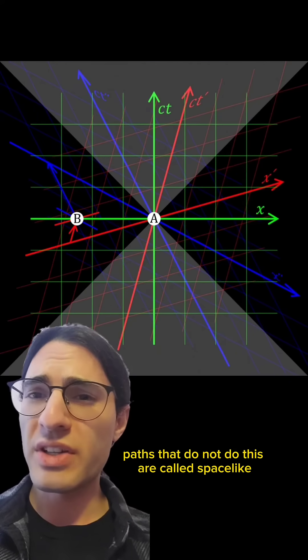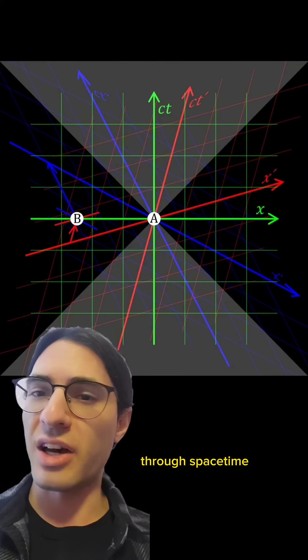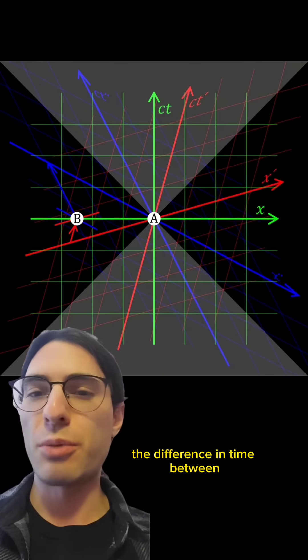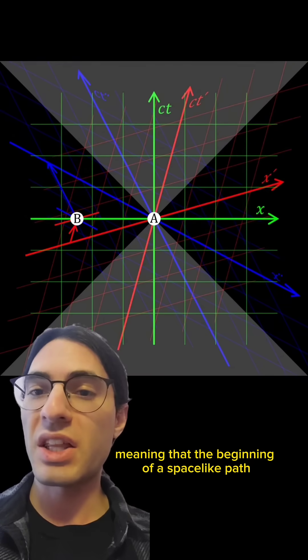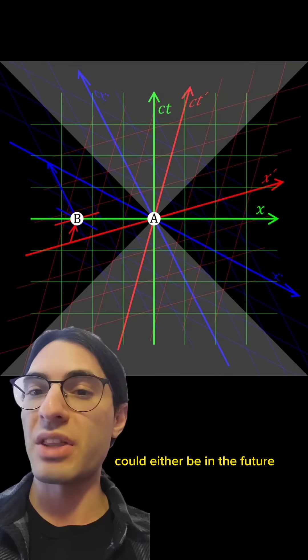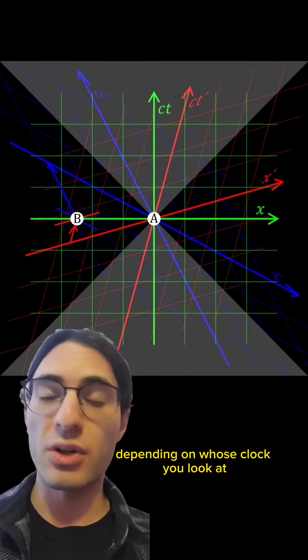Paths that do not do this are called spacelike, and while it's impossible for an object to travel along a spacelike path through spacetime, the difference in time between two points connected by a spacelike path can be either positive or negative, meaning that the beginning of a spacelike path could either be in the future or the past of the end of the spacelike path, depending on whose clock you look at.